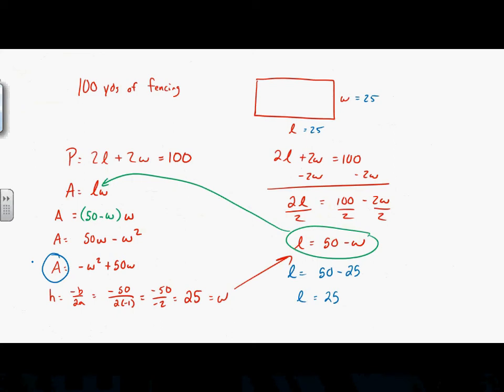That's pretty much all of section 2.2 — finding the vertex and using it to find the maximum or minimum.